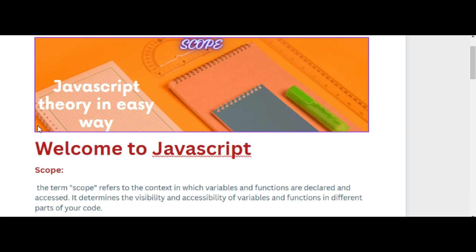In JavaScript, there is a term 'scope' which refers to the context in which variables and functions are declared and accessed. It determines the visibility and accessibility of variables and functions in different parts of your code. There are two main types of scope in JavaScript: global scope and local scope.